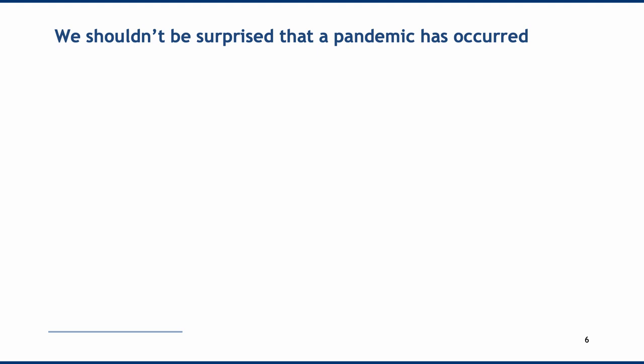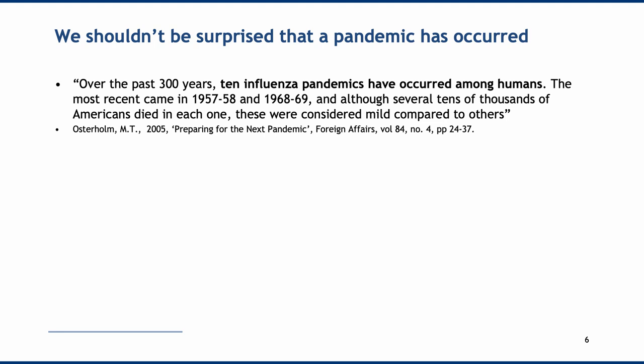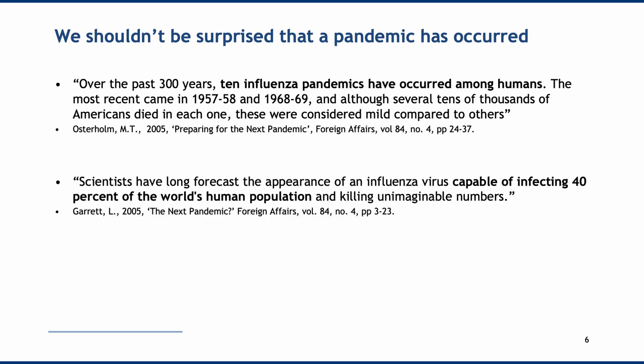We shouldn't be surprised that a pandemic occurred. A Foreign Affairs article published in 2005 noted that over the past 300 years, 10 influenza pandemics have occurred among humans. The most recent — 1957–58 and 1968–69 — each killed several tens of thousands of Americans and were considered mild. Another 2005 Foreign Affairs article said scientists had long forecast an influenza virus capable of infecting 40% of the world's population and killing unimaginable numbers.